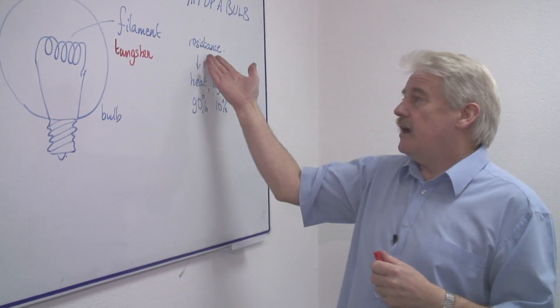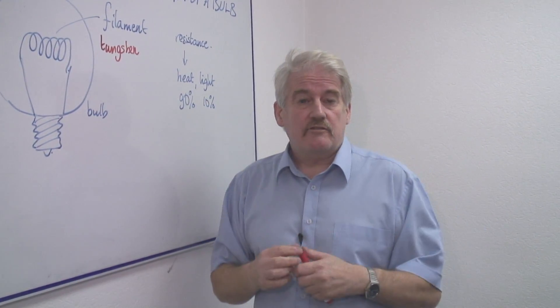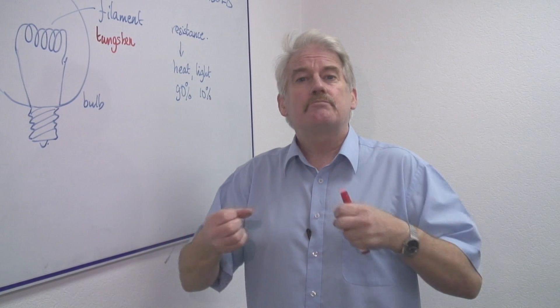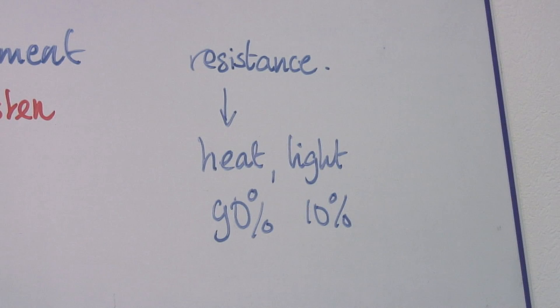If it has a high resistance then it stops electricity running through it or when the electricity runs through it, it produces a lot of heat.